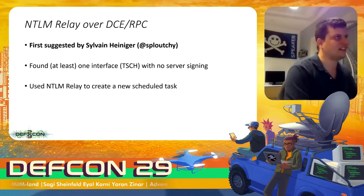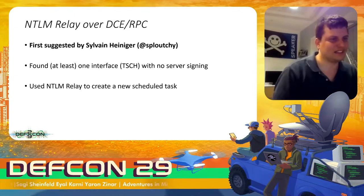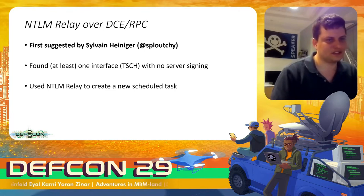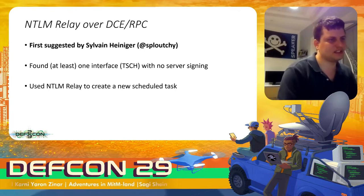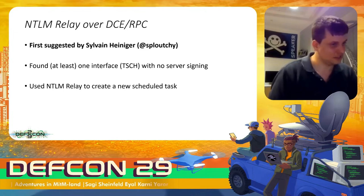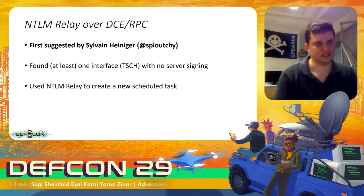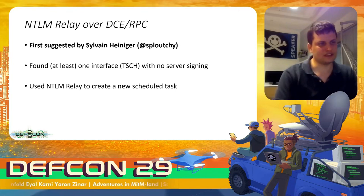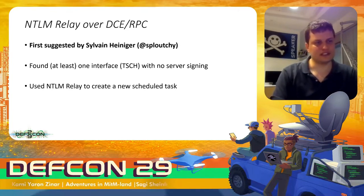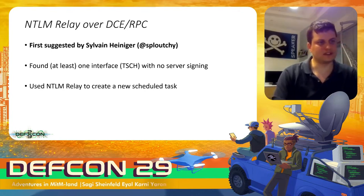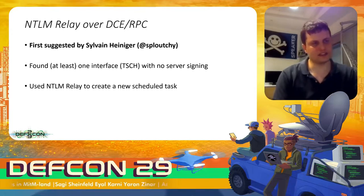NTLM relay only works if the server does not enforce signing or encryption on the target. Sylvan found that one could authenticate to a certain RPC interface — the task scheduler — and it does not enforce signing. It's even written in the spec. So using the classical NTLM relay technique, one could relay the authentication to the server and afterwards send an unsigned packet that causes it to run an arbitrary task, effectively resulting in a remote code execution vulnerability.